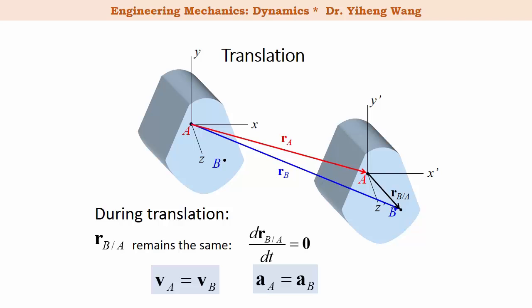You can also say that during translation all the particles in the rigid body will always move at the same velocity, same acceleration at all time.